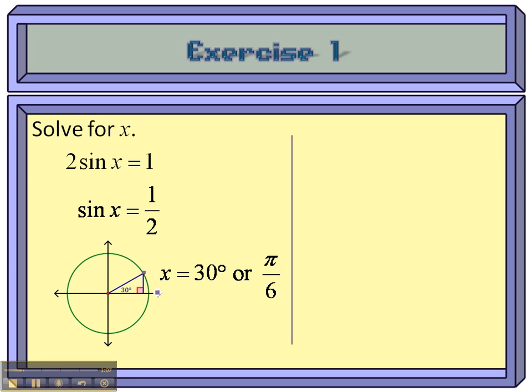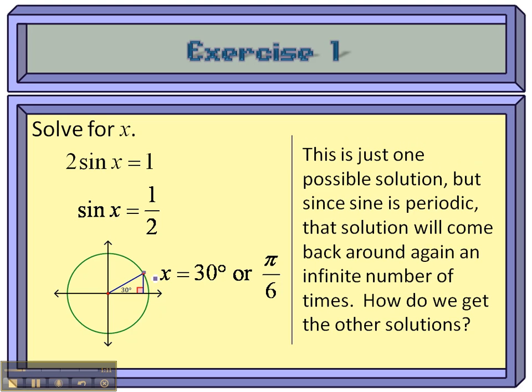Since sine is periodic, you're going to have an infinite number of solutions. So if we come back around to this point again after 360 degrees, we get another one, and another one, and another one.